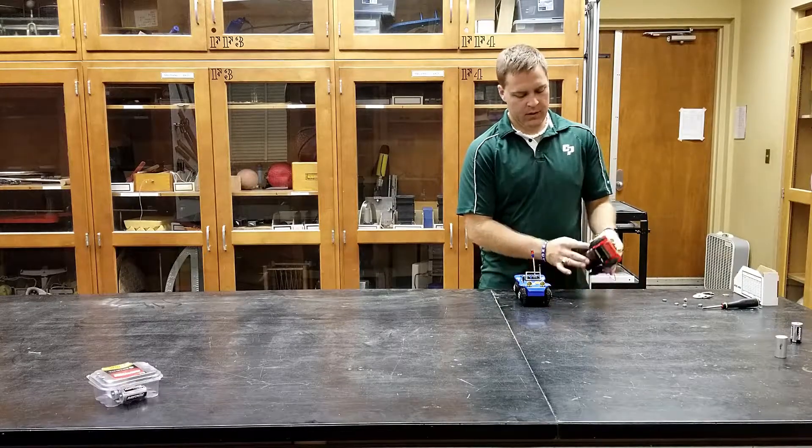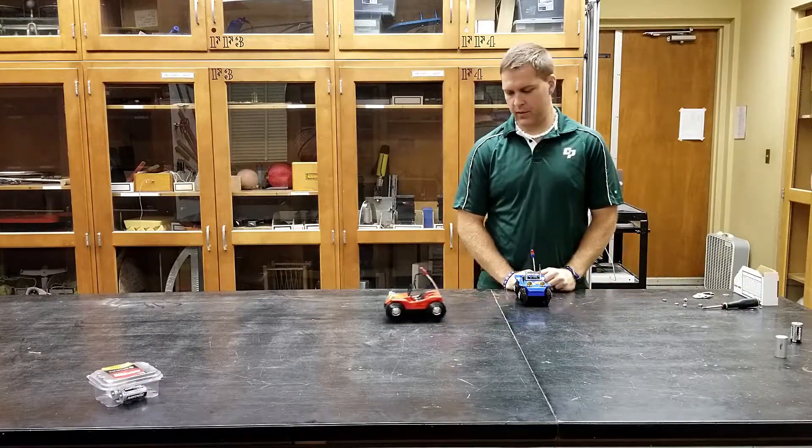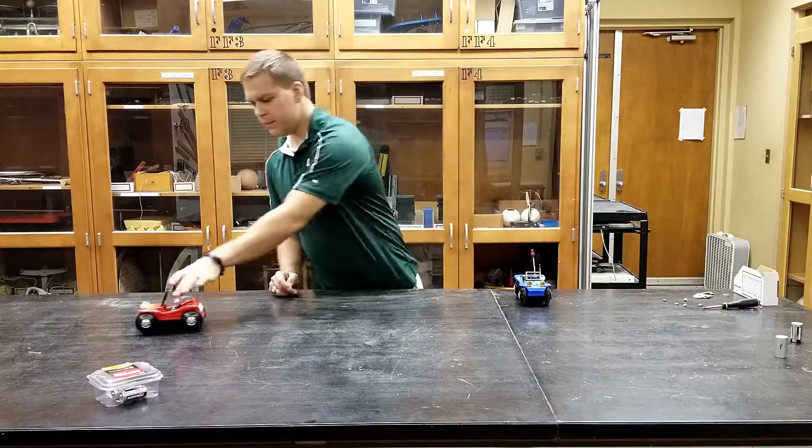Here we have two constant velocity carts, a red one and a blue one. The red one travels a bit faster. You can ask your students to observe the motion of this cart.